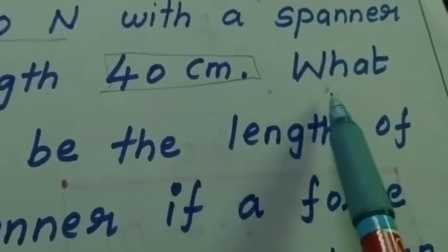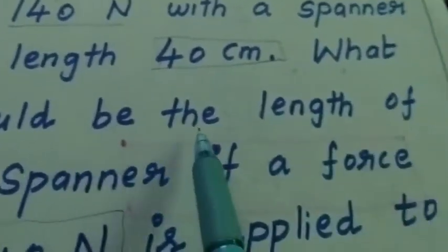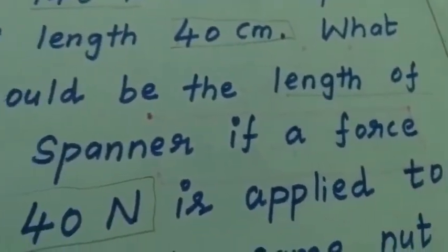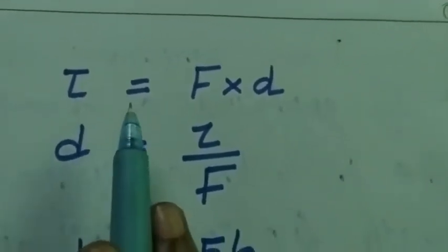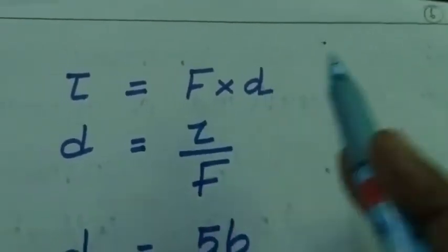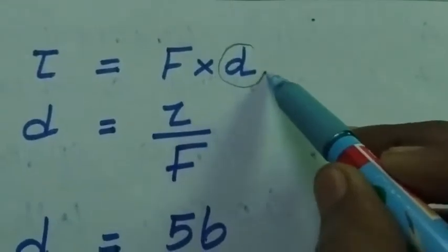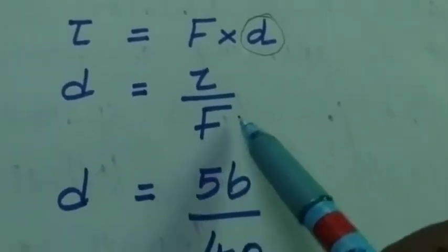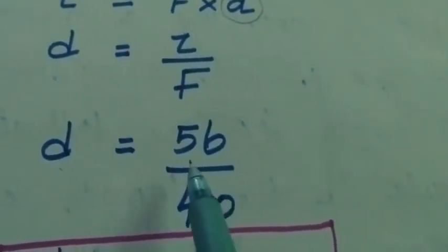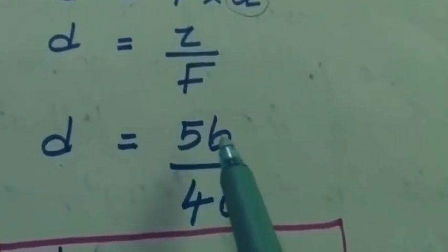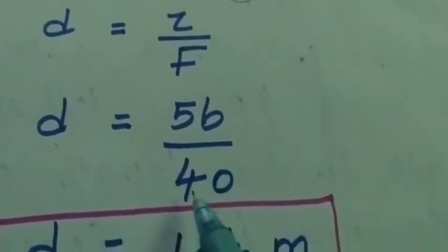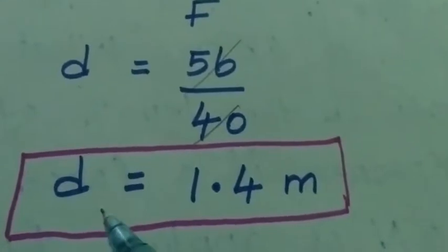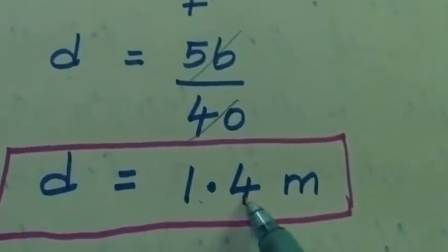In this problem we have to find the length of the spanner. So tau equal to f into d, and we have to find d. So d equal to tau divided by f. Torque 56 divided by force applied 40 newton. If we divide both terms we get distance equal to 1.4 meter.